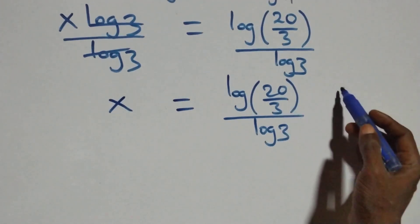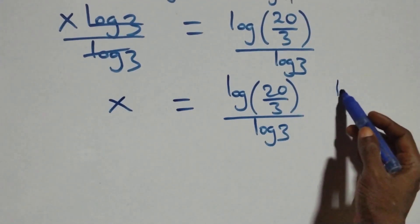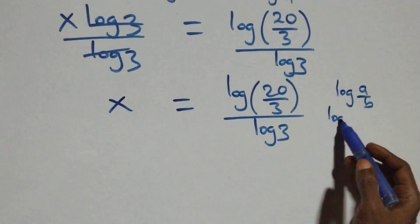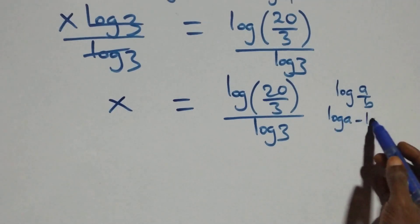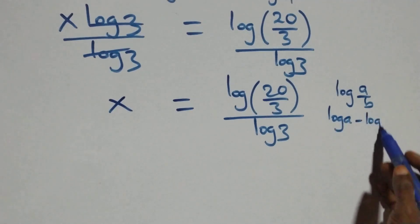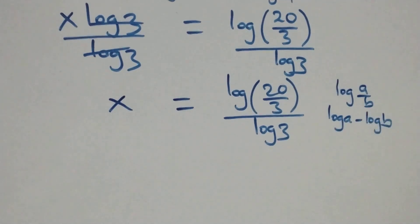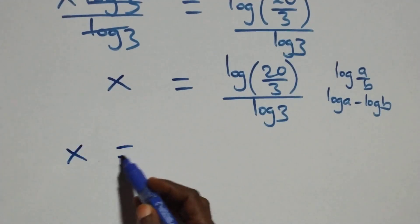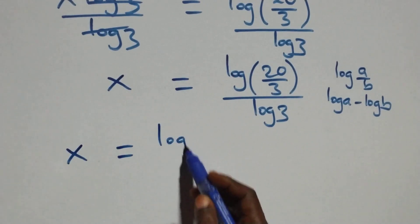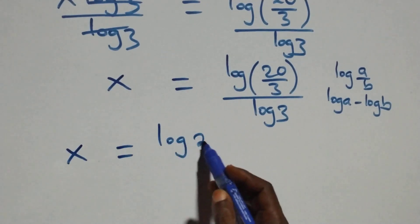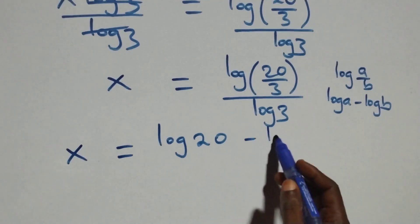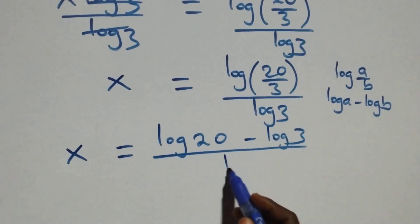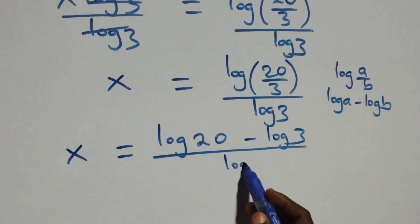We have x equals log 20 over 3, divided by log 3. Then we apply the log quotient rule: when we have log a over b, this is the same as log a minus log b. So we have x equals log 20 minus log 3, over log 3.